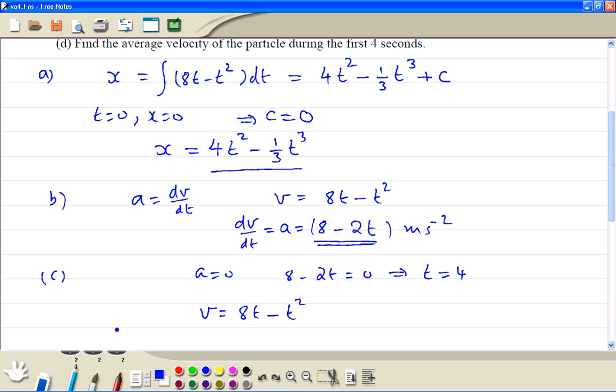So we have v equals 8t minus t². So when t is equal to 4, velocity is 8 times 4 minus 4 squared, so that's 32 minus 16, that's 16 meters per second.